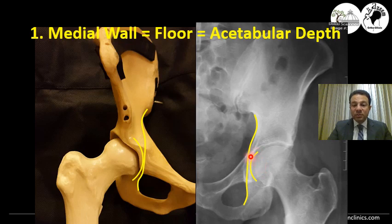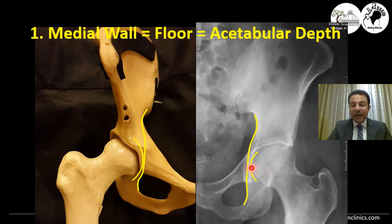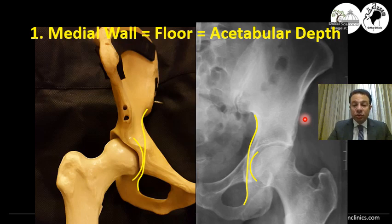If this medial wall is protruding, touching, or medially protruding beyond this line, that means that the acetabulum is deep and the cave is deep. That means that either you have a coxa profunda — a huge acetabulum — or a protrusio acetabuli, meaning that the head is protruding into the pelvis.